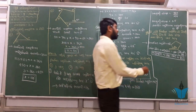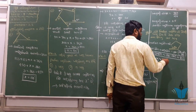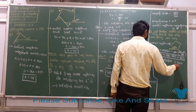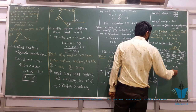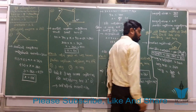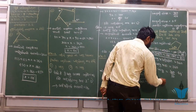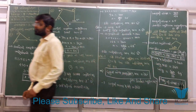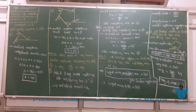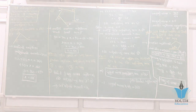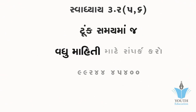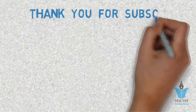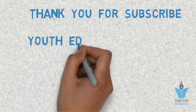ન્નુ માટે — બાજો ની સંખ્યા ગુણ્યા બહિષ્કોણ = 360°. 360° ÷ 24 — ચોત્રીસ. Thank you.